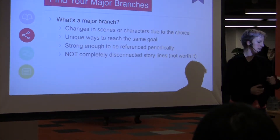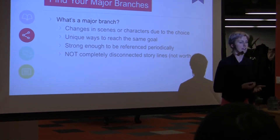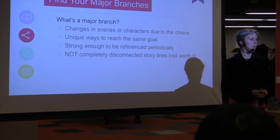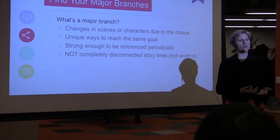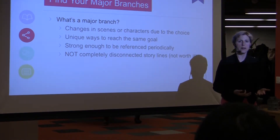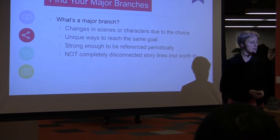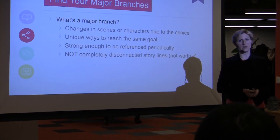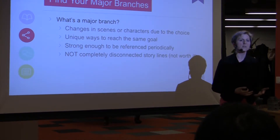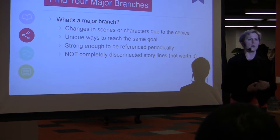Great examples of branches include: who you might date and what gender they are — this actually changes what the dates look like, what scenes you have, how they react to you. In the very first season of The Walking Dead, who you choose to save in the convenience store is a great example of a good branch where the actual scenes that you see will change, but the core story does not. And in Inkle's Sorcery, the different paths you take to reach different parts of the town are great examples of good branches where you see different scenes, but each major story layer you hit along the way stays the same.